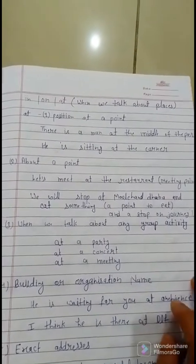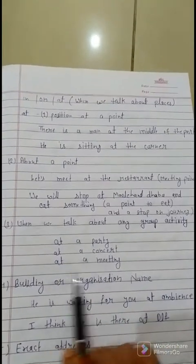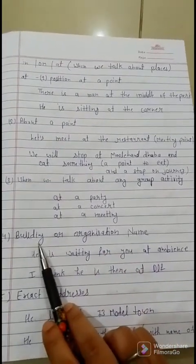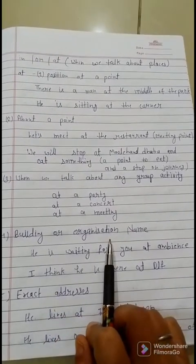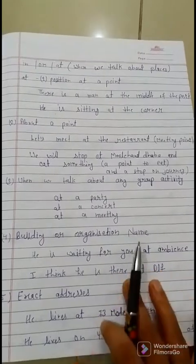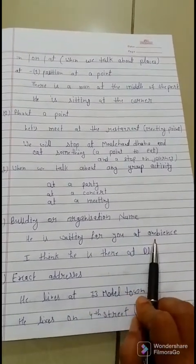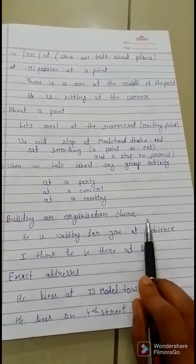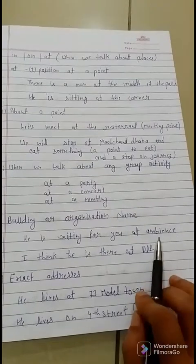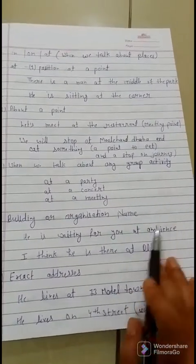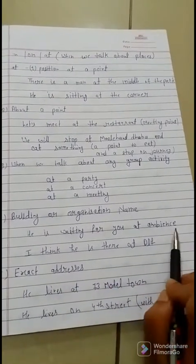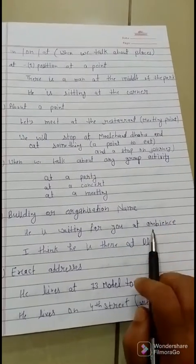We also use 'at' when we talk about group activities — for example, 'at a party', 'at a concert', 'at a meeting'. Another use is when we mention a building or organization's name. For example, 'he is waiting for you at the Ambience' — we are not saying inside or outside the building; we are just referring to the building overall. So here we use 'at': 'he is waiting for you at the Ambience'.